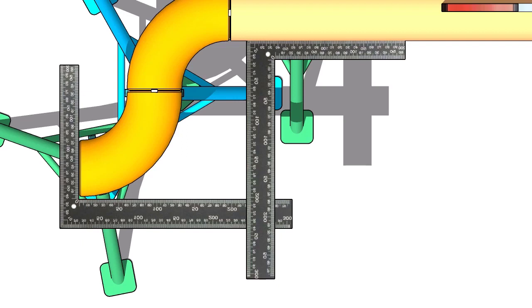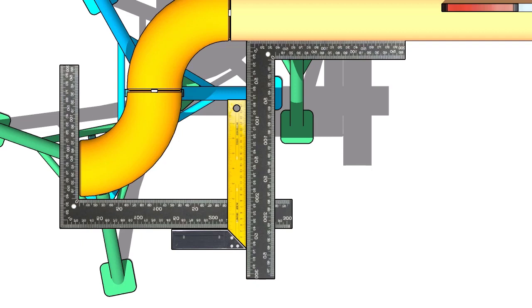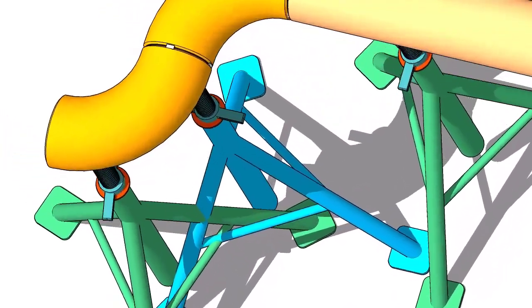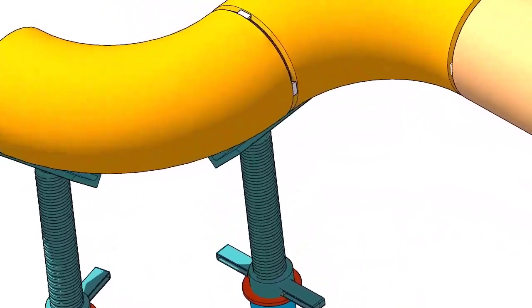Hold two right angles, one on the face of the elbow and one on the pipe side. Now use another right angle and check the squareness. Tack weld on both sides of the elbow.